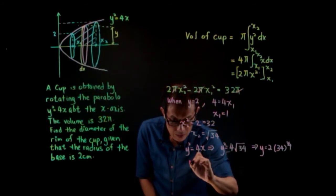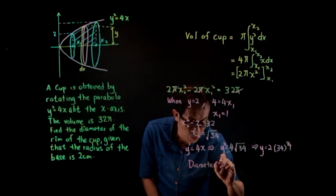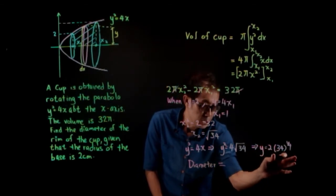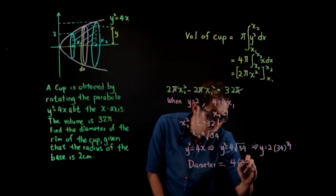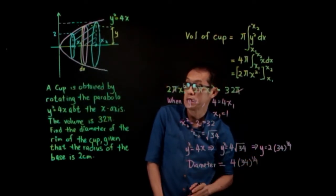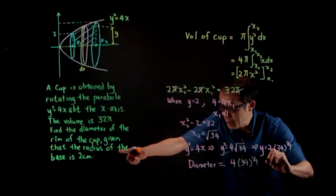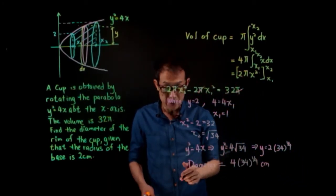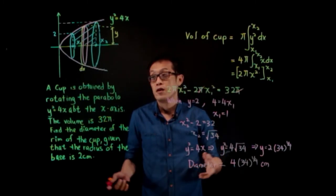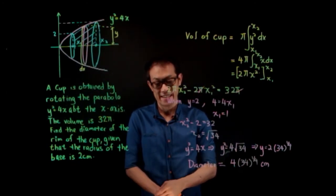Therefore, the diameter equals 2 × 2 · 34^(1/4) = 4 · 34^(1/4) cm. The units are centimetres. We have come to the end of this question. Thank you for watching and have a nice day.